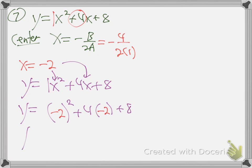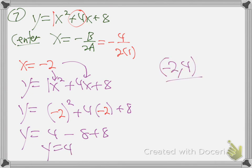Now look at the graph for a minute - shouldn't we have already known that? Where does that graph hit the x-axis? It starts up there above the x-axis and goes up - it's not going to hit the x-axis. Of course there's no x-intercepts.